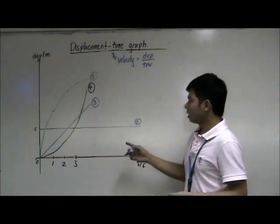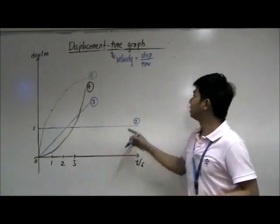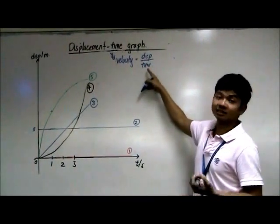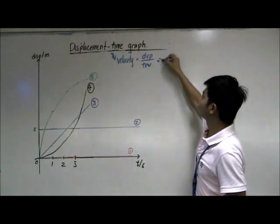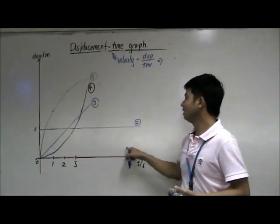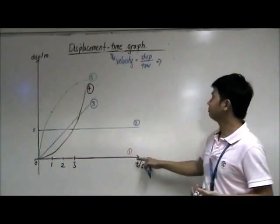Which part of the displacement-time graph tells us the ratio of displacement over time? It's actually the gradient of the graph. The gradient is the ratio of the y-axis over the x-axis. The y-axis here is displacement, x-axis is time.